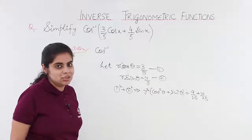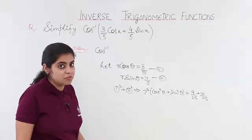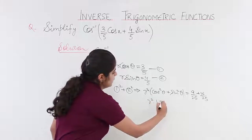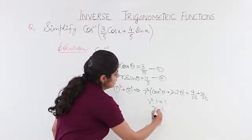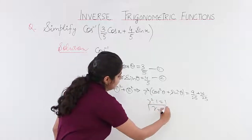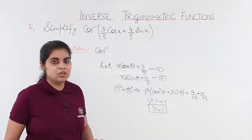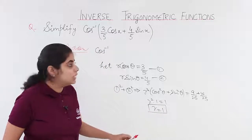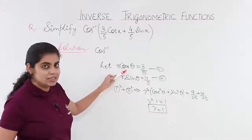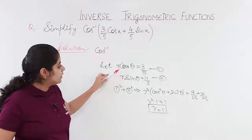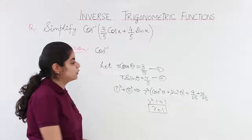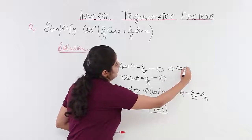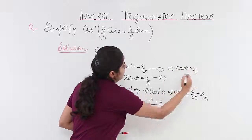That is 9/25 + 16/25. Since 16 + 9 = 25, this gives 25/25 = 1. So r² × 1 = 1, which means r = 1. Since r = 1, r cos θ = cos θ = 3/5.